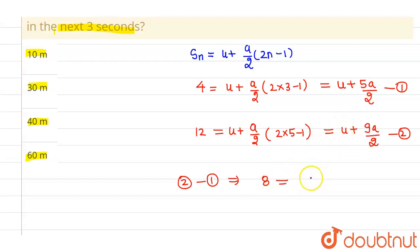On the right hand side, u will cancel out. Overall, I will be getting 9a by 2 minus 5a by 2 which is 2a. So this implies the value of a comes out to be 4 meter per second square.